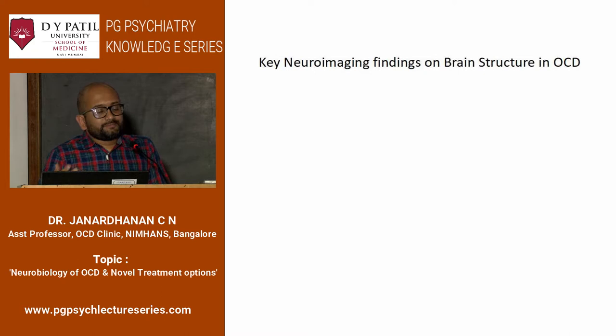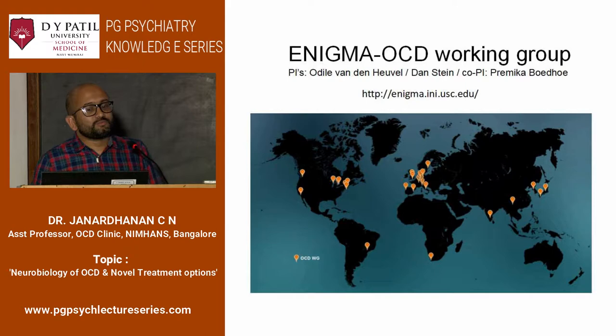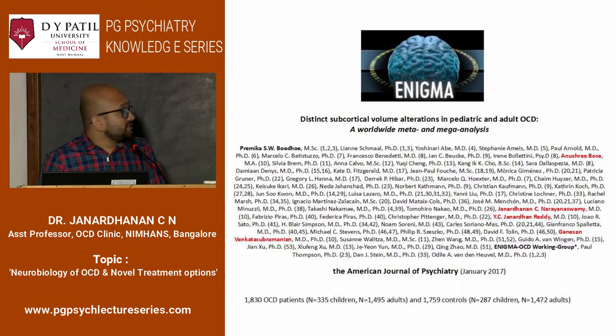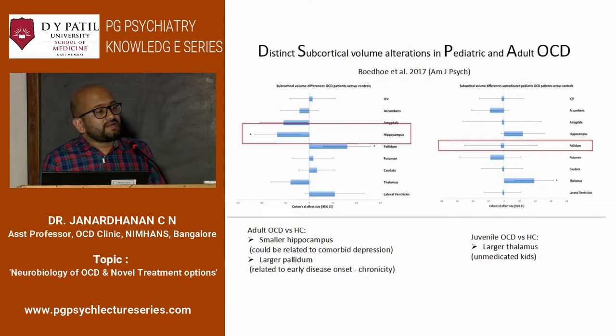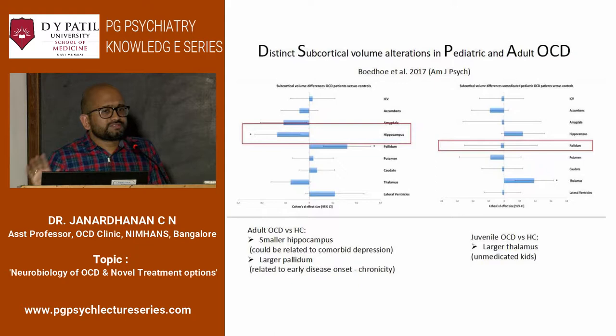There is a working group in which we participated by contributing neuroimaging scans — a pooled analysis from almost 30 centres across the world. The number of scans: 1,830 OCD patients compared to almost 1,800 healthy controls — a really good sample. What was seen in this analysis: initially a subcortical analysis was done, then cortical structures. What was found is that people with OCD tend to have a greater pallidum (that is, globus pallidus) volume — so there is definitely a basal ganglia pathology seen in OCD — but not so much with various other structures.